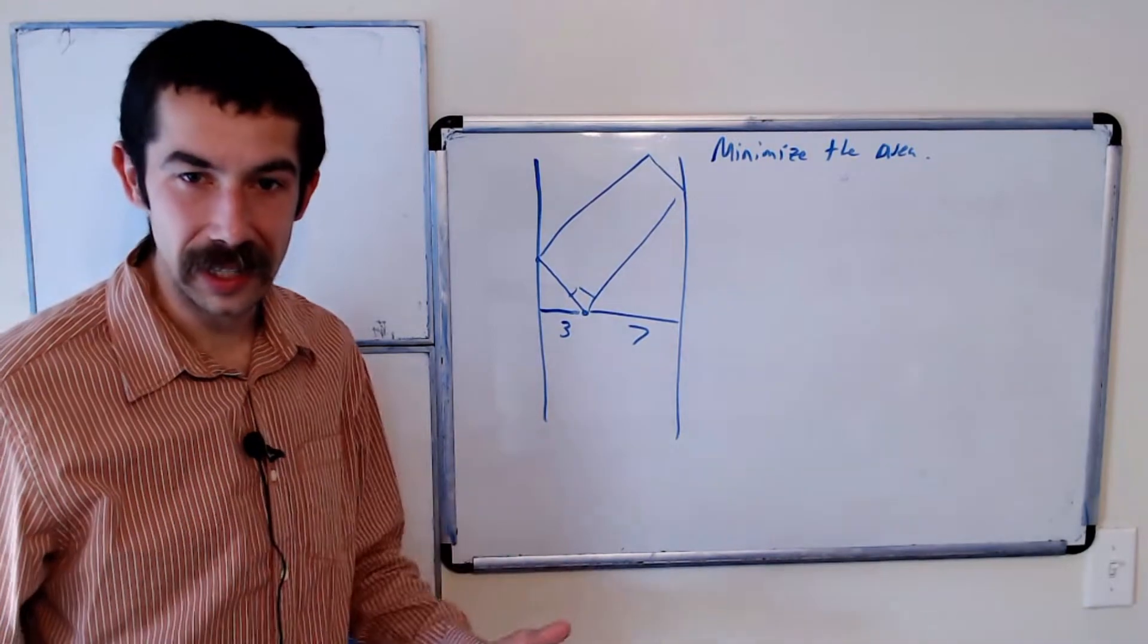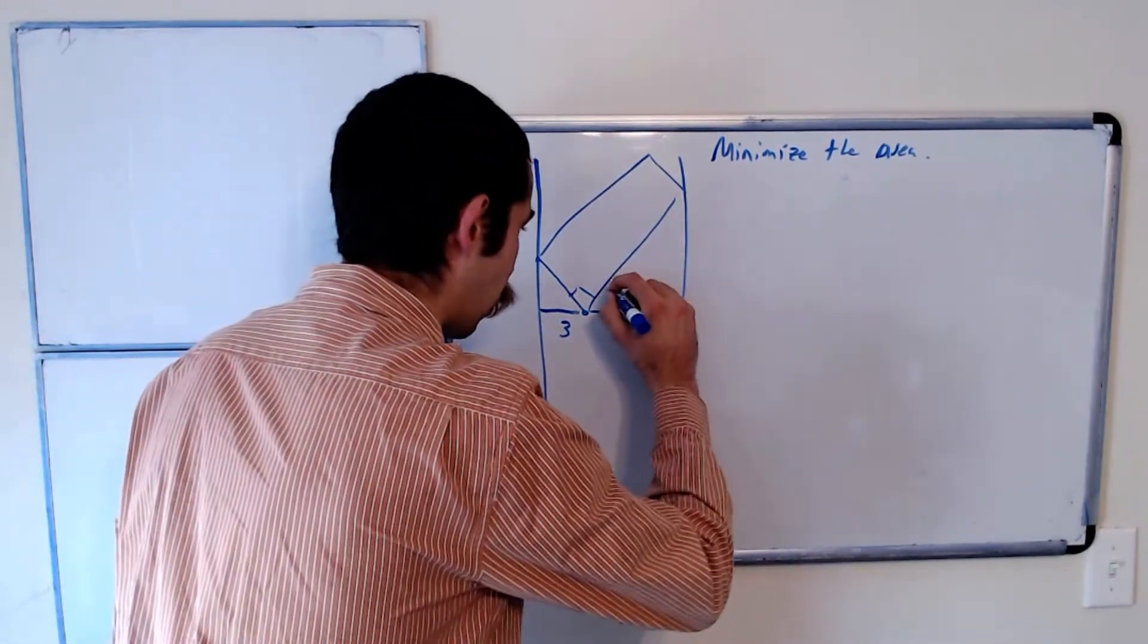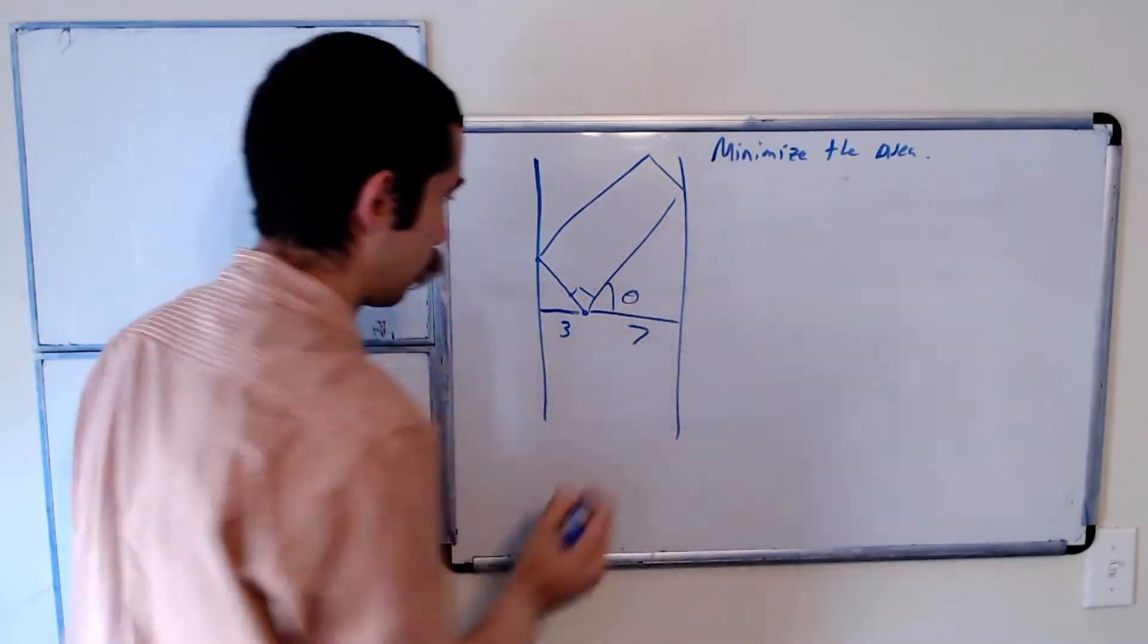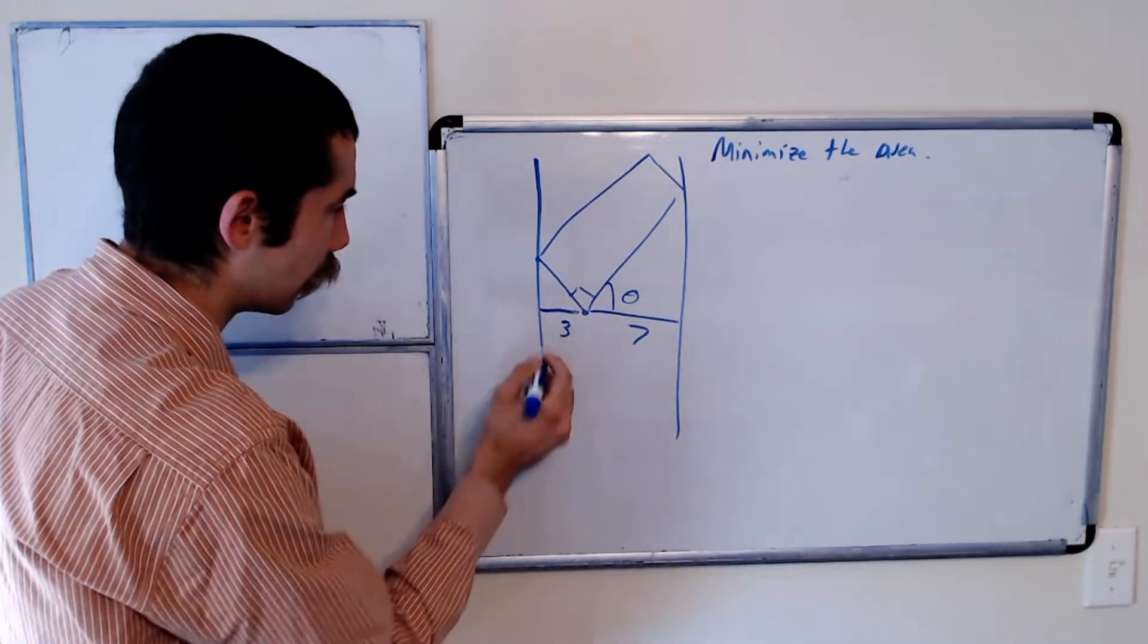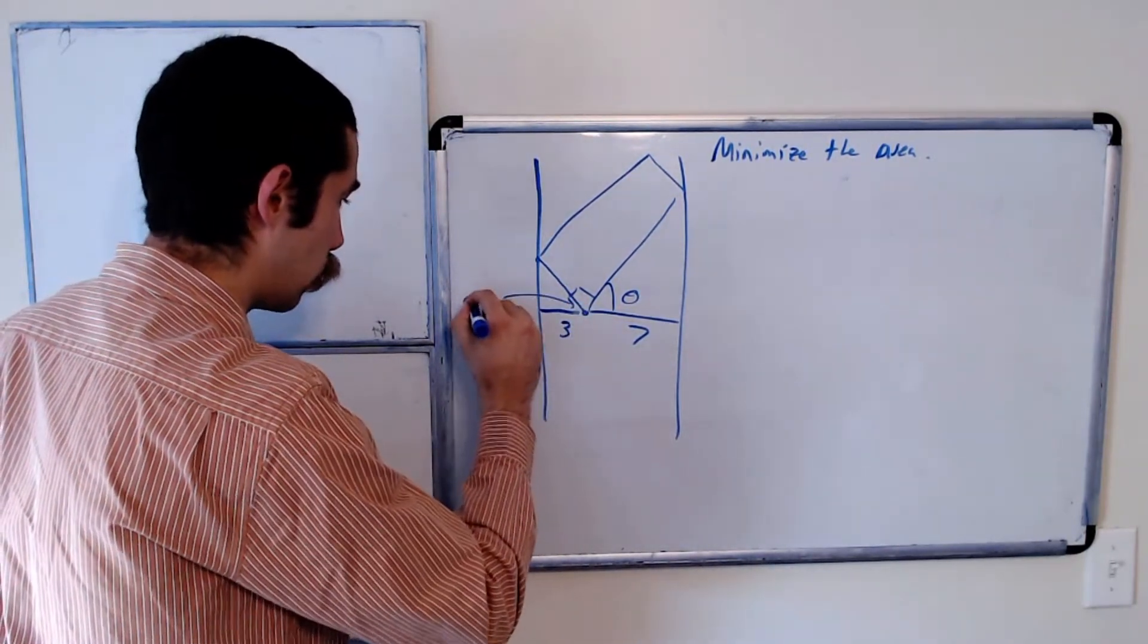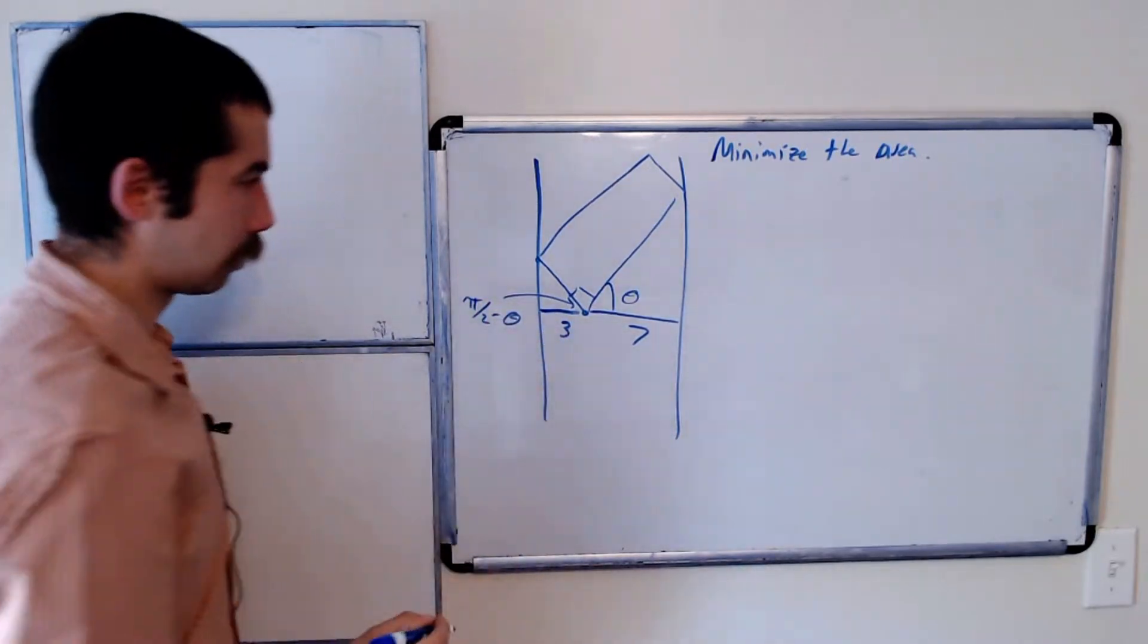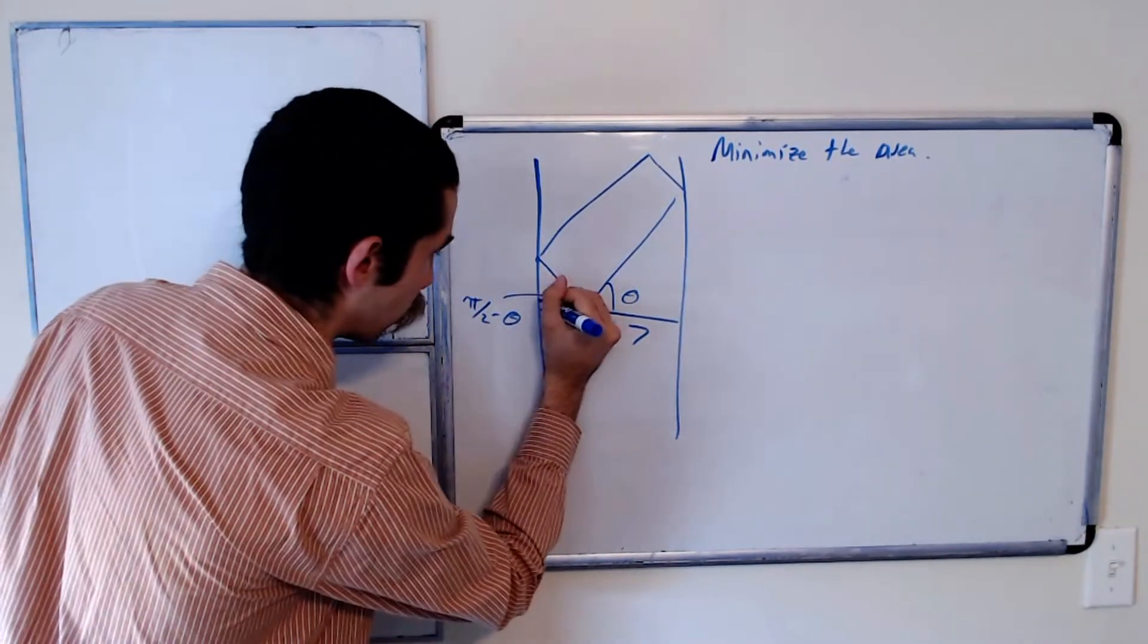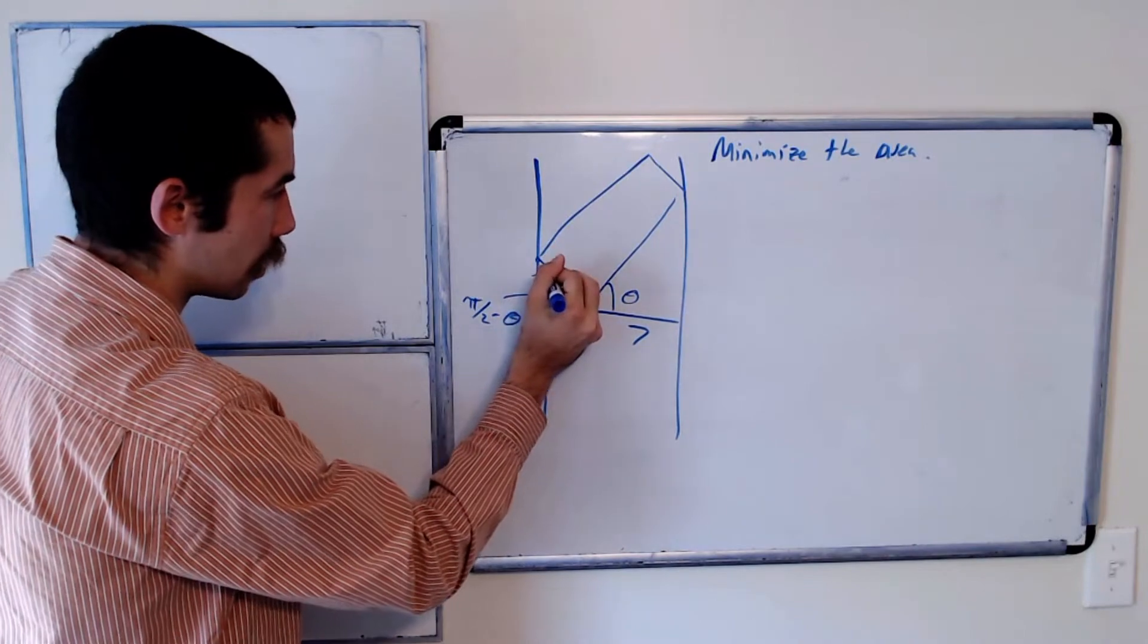Okay, so the way I did it was I called this angle theta. So this angle here is pi over 2 minus theta. This is a right angle and so this angle here is also theta.